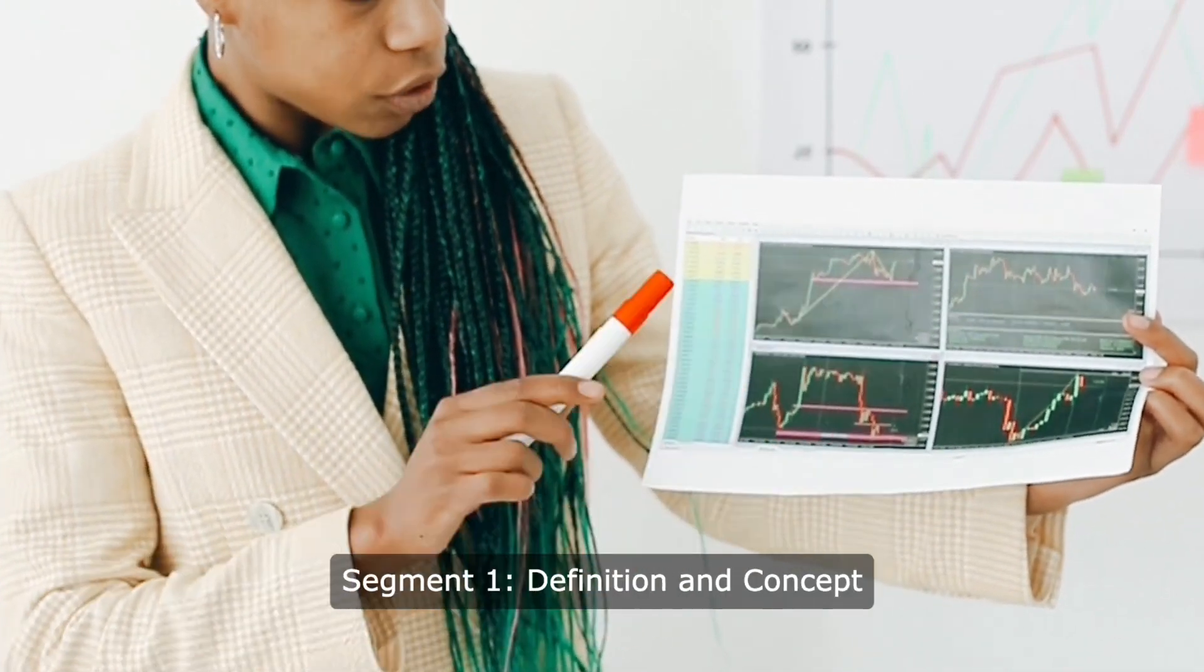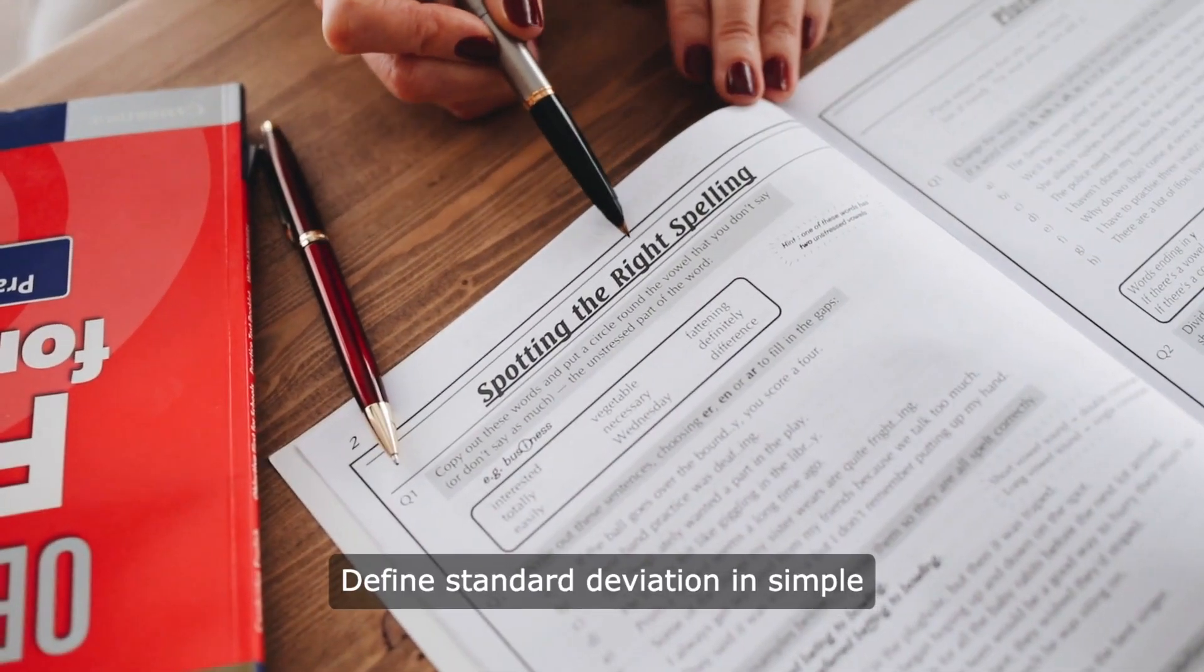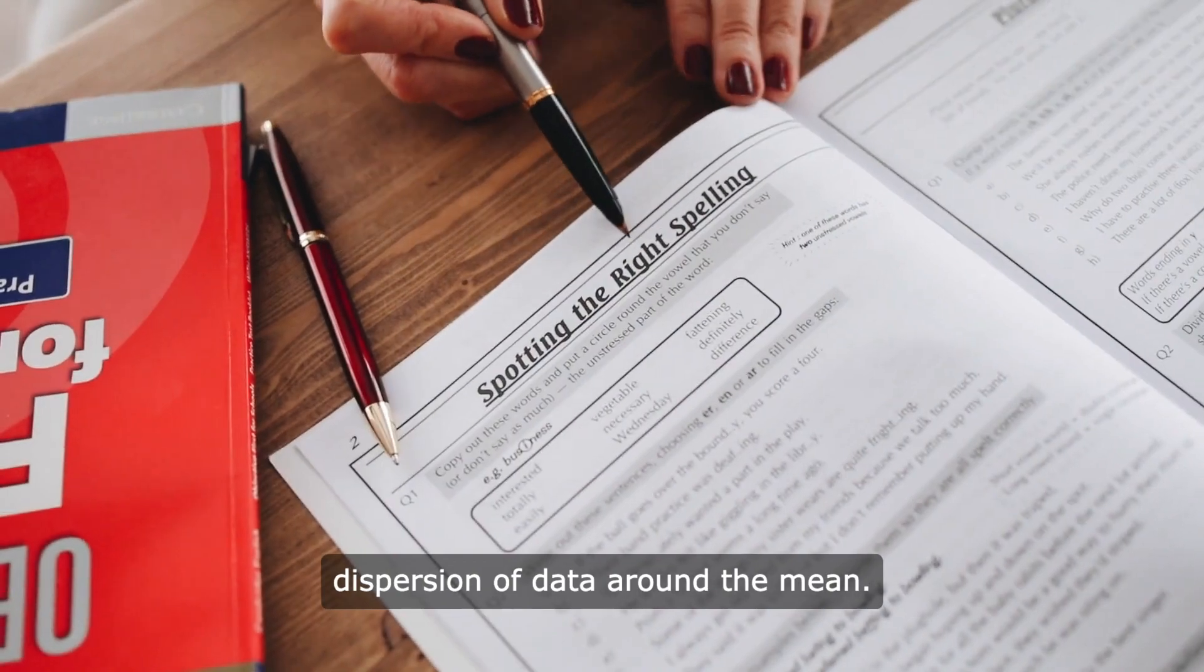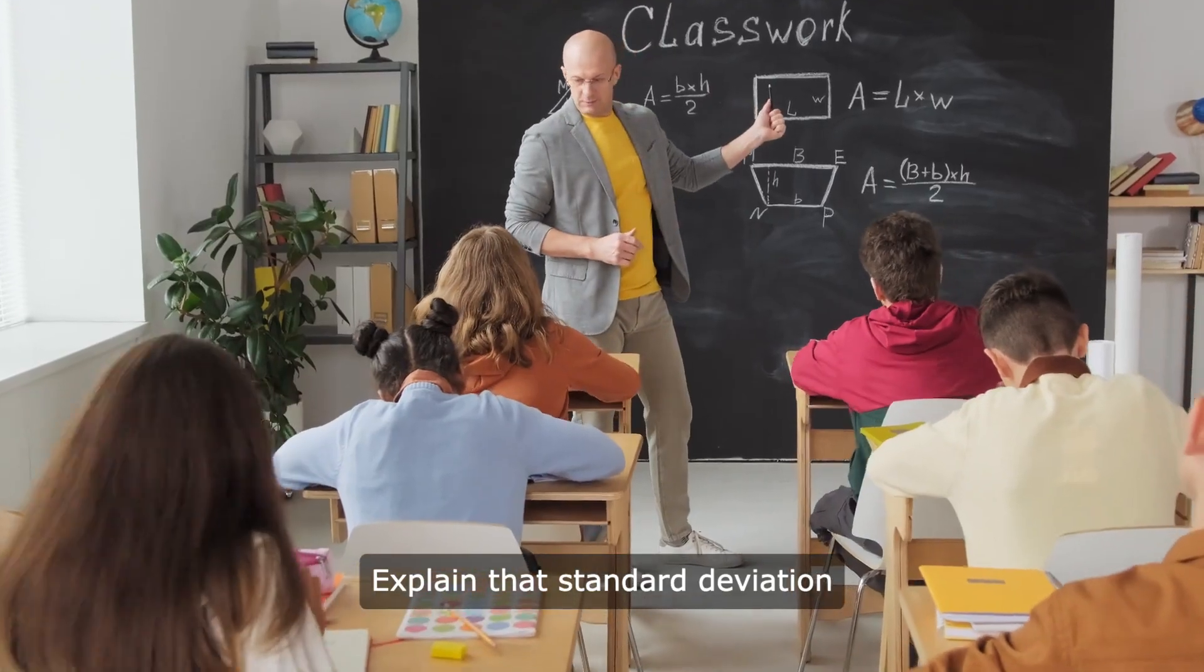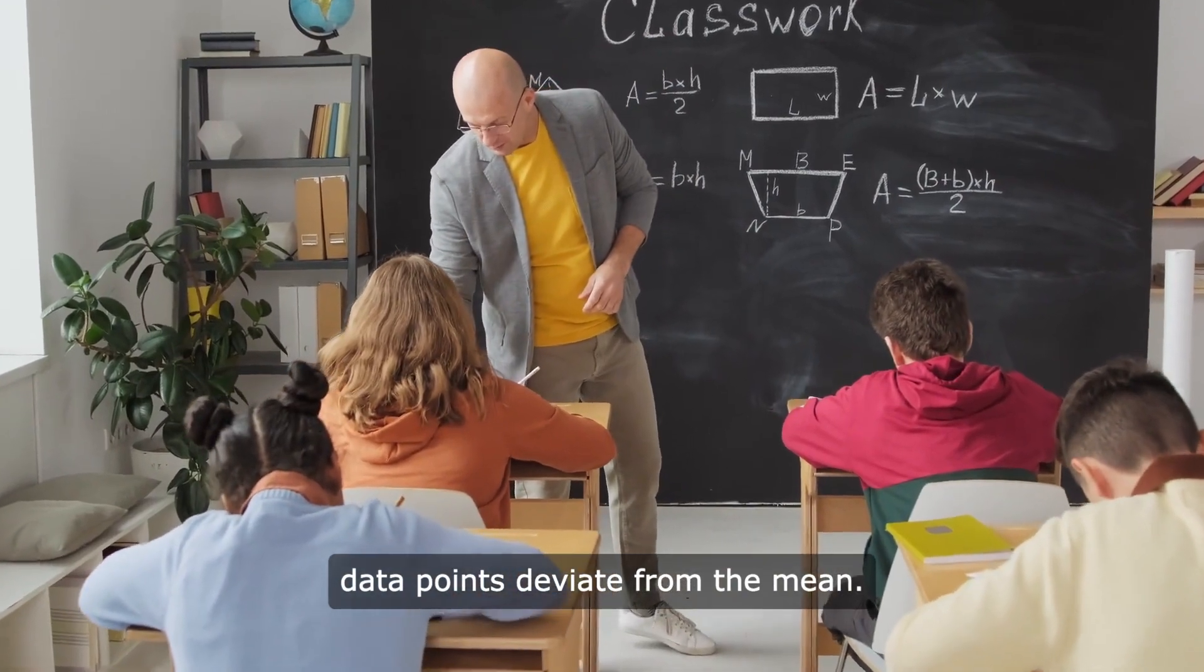Segment one: Definition and Concept. Standard deviation is defined in simple terms as a measure of the spread or dispersion of data around the mean. Standard deviation quantifies how much individual data points deviate from the mean.